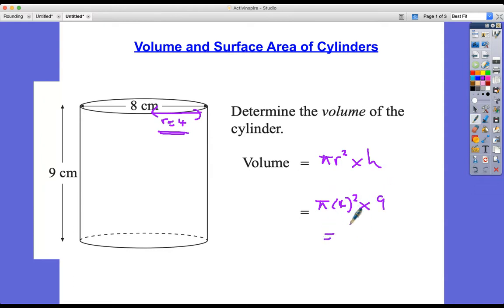We're going to put that into our calculator. 16π multiplied by 9 is 144π, or equal to 452 centimeters cubed to three significant figures.